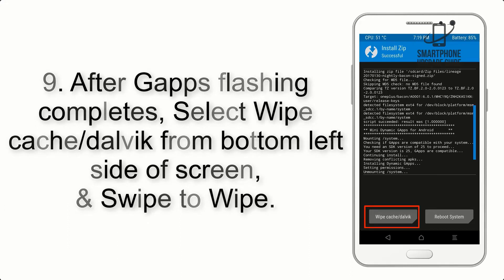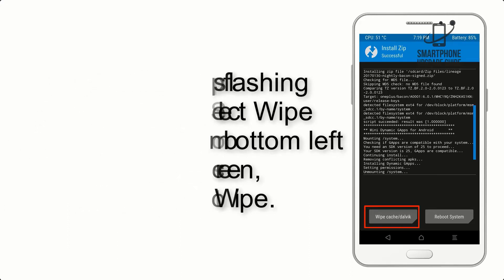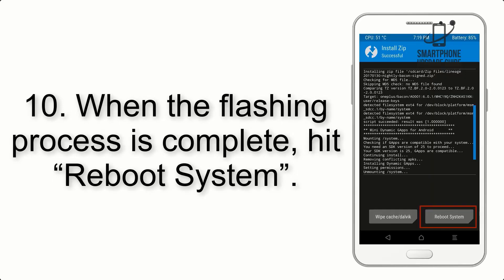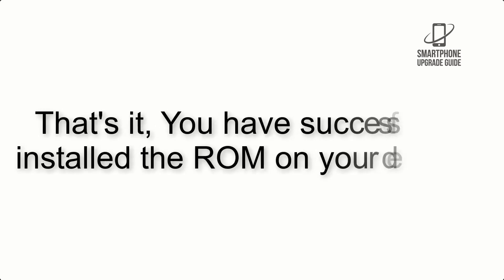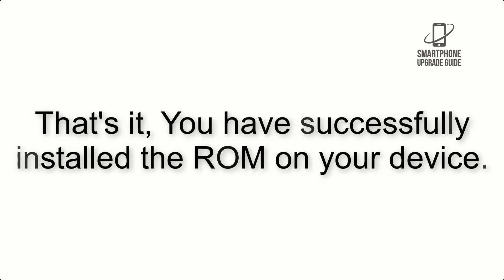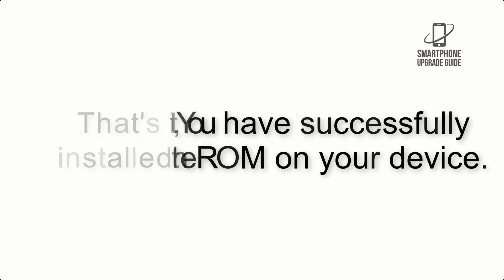Step 8: Flash the GApps zip package in the same manner. Step 9: After GApps flashing completes, select Wipe Cache and Dalvik from the bottom left side of the screen and swipe to wipe. Step 10: When the flashing process is complete, hit Reboot System. That's it — you have successfully installed the ROM on your device.